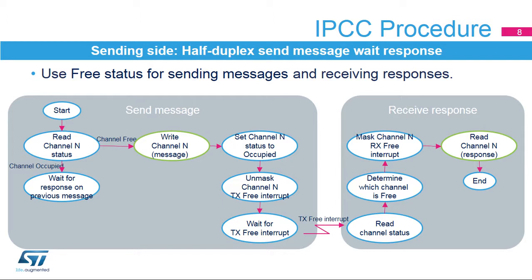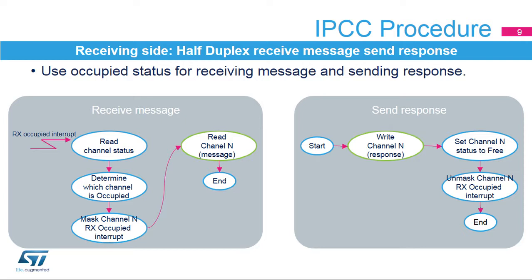The channel-free interrupt indicates the availability of the response sent by the receiving side. When a channel-free interrupt or response ready is generated, the sending side determines which channel is freed and masks the corresponding channel-free interrupt. Subsequently, the response can be read from the channel data buffer. When a channel-occupied interrupt or message available is generated, the receiving side determines which channel is occupied and masks the corresponding channel-occupied interrupt. Subsequently, the message can be read from the channel data buffer.